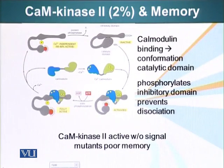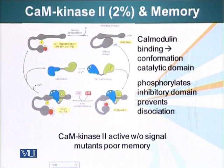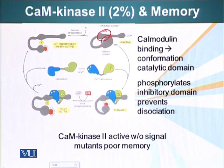One of the targets for calmodulin is cam kinase 2. It is another enzyme which is present in specific neurons, specific parts of the brain — about 2% of certain regions of the brain. This cam kinase 2 has two important domains: an inhibitory domain and a catalytic domain. When this protein is inactive, the inhibitory domain is bound to the catalytic domain and prevents it from functioning.